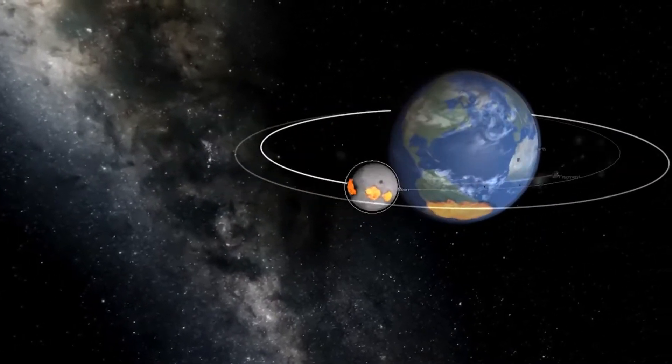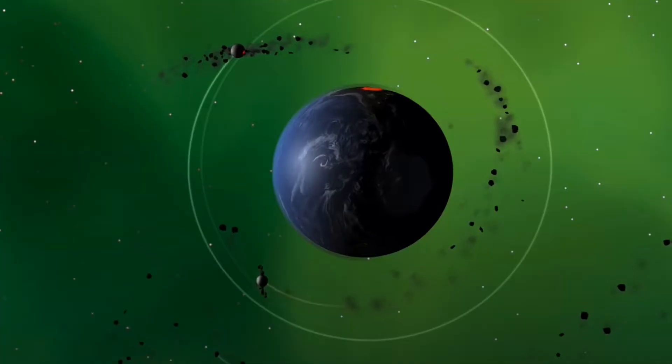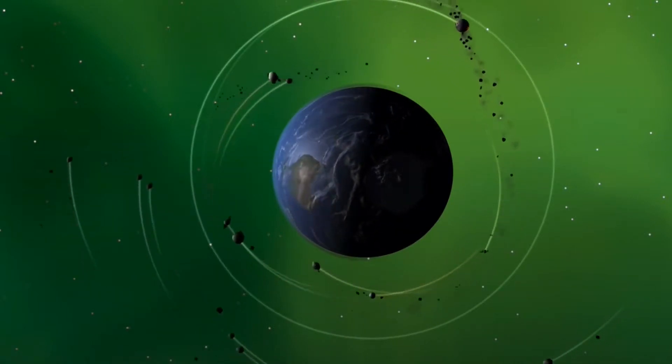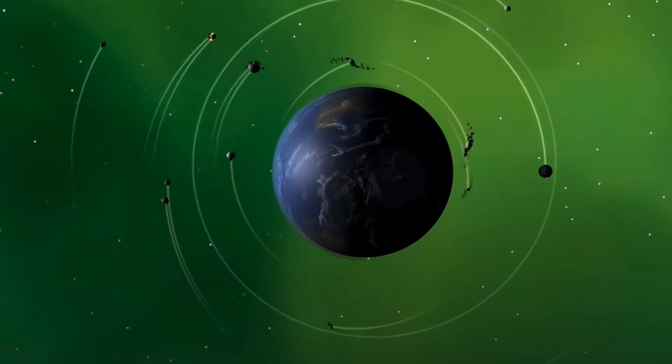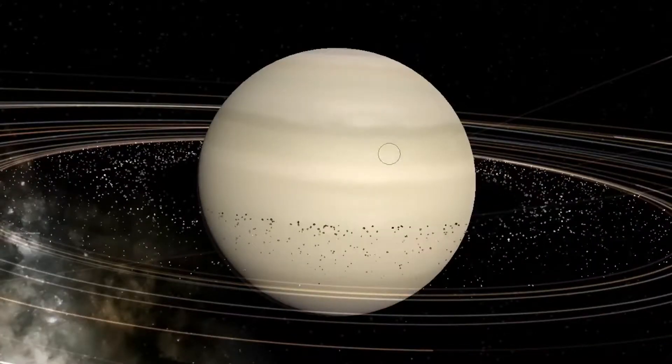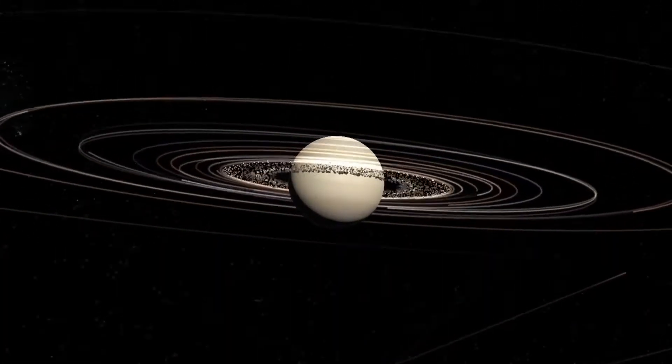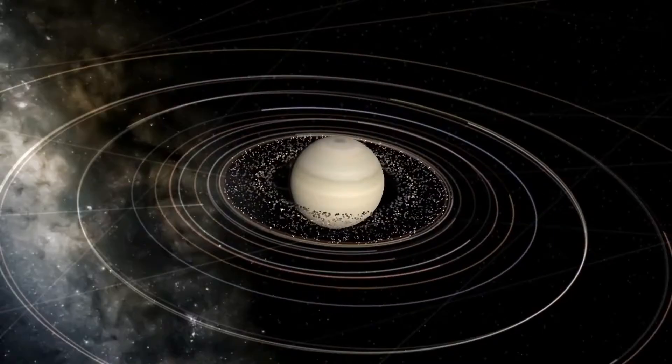If the object was orbiting extremely quickly during its breakup with respect to the planet, then most of the pieces have enough energy to overcome the planet's gravitational force and will escape into the solar system. Only when the pieces are moving at just the right velocity will they form rings around the planet, instead of crashing into it or escaping.